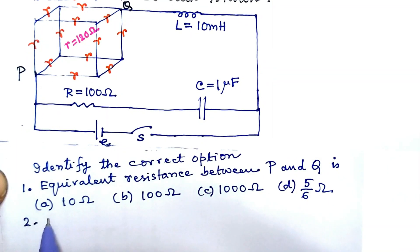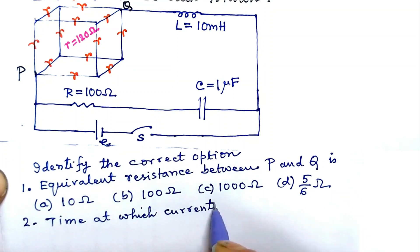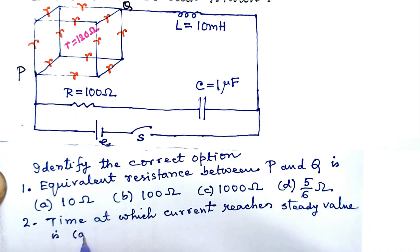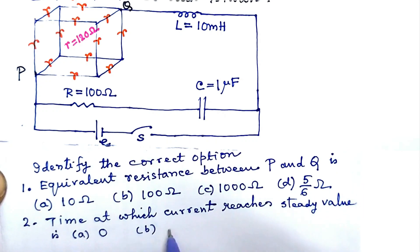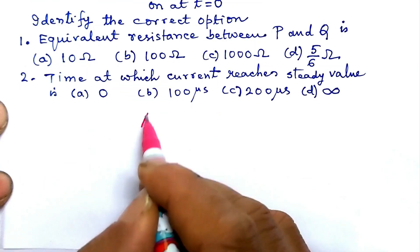And number two, time at which current reaches steady value is, and the options are a, b, c, d. Let us come to the answer.